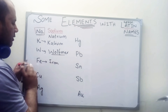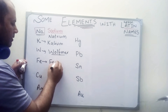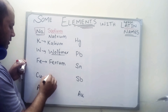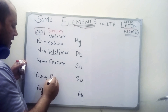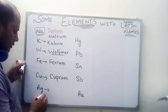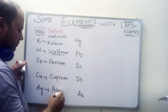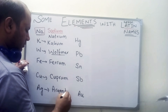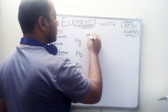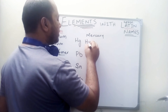We have iron, but we used to call it ferrum. We have copper, and we have silver — silver we call it argentum.